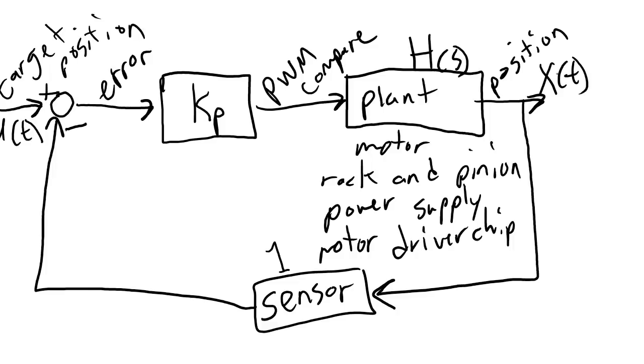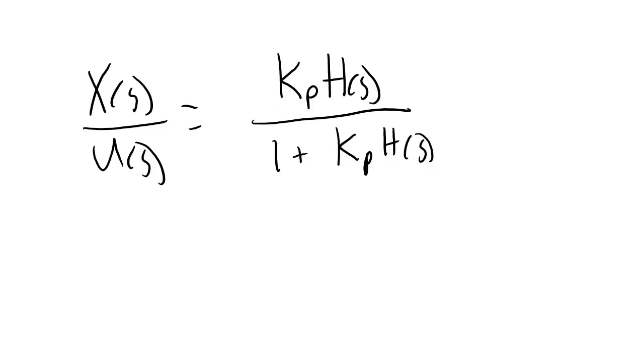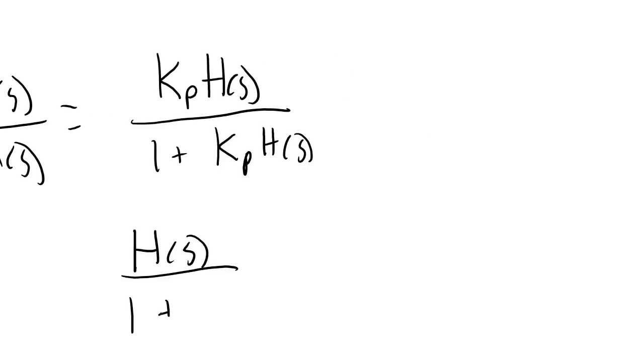We can write the entire block diagram equation as x over u by using this equation. This equation comes from a set of rules of something called block diagram reduction that you'll know if you've taken a controls class before, and if you don't know, that's okay. This equation is the only block diagram reduction rule that we'll need in order to do our controller tuning. So we've already done an experiment where we've found the relationship between x of s and u of s in this particular system that we have set up. We set kp equal to one, and we measured the output of a step response. So we could write this equation like this. When kp is equal to one, we have h of s over one plus h of s is equal to the second order equation that we've found previously.